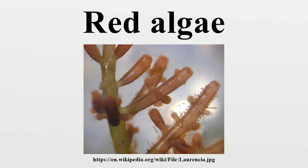strongly resembles the modern red alga Bangia despite occurring in rocks dating to 1.2 billion years ago. Red algae are important builders of limestone reefs. The earliest such coralline algae, the solenopores, are known from the Cambrian period. Other algae of different origins filled a similar role in the late Paleozoic, and in more recent reefs.